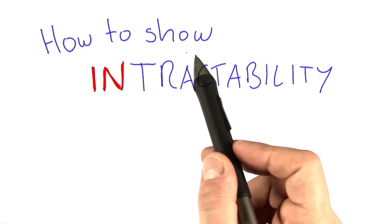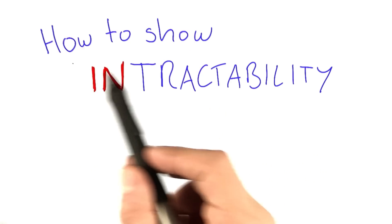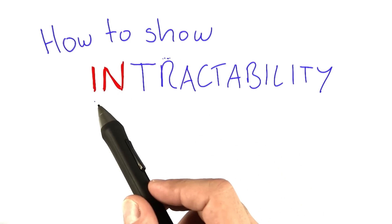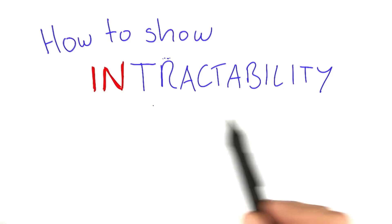So now that we talked about the detail of optimization problems versus decision problems, we're ready to dive in. So how can we show that a problem is intractable?